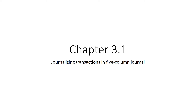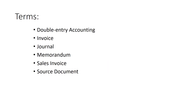Chapter 3.1: Journalizing Transactions in a 5-Column Journal. We're going to continue our look at bookkeeping, moving from T-Accounts this chapter into what is called a journal.